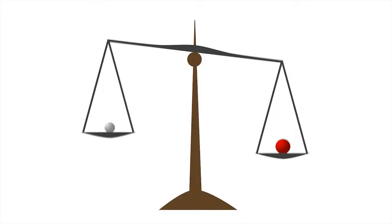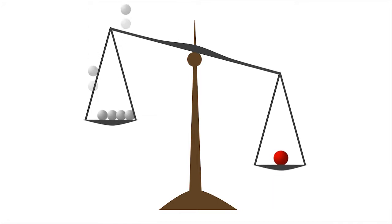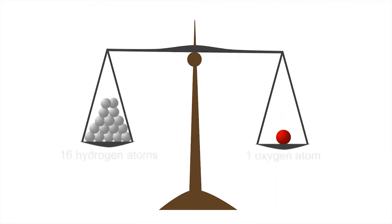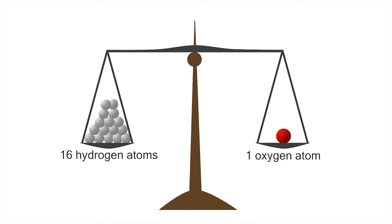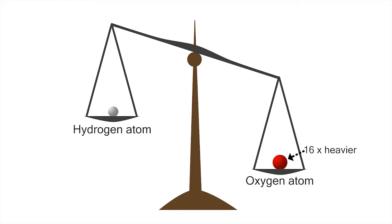The atoms of different elements have different weights relative to each other. For example, one oxygen atom weighs the same as 16 hydrogen atoms, because an oxygen atom is 16 times heavier than a hydrogen atom.